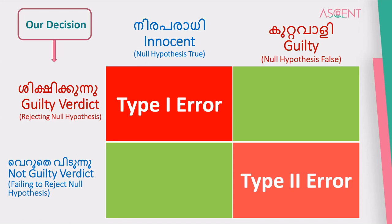Here are your four outcomes. These include the correct decisions and the two types of errors — Type 1 error and Type 2 error.